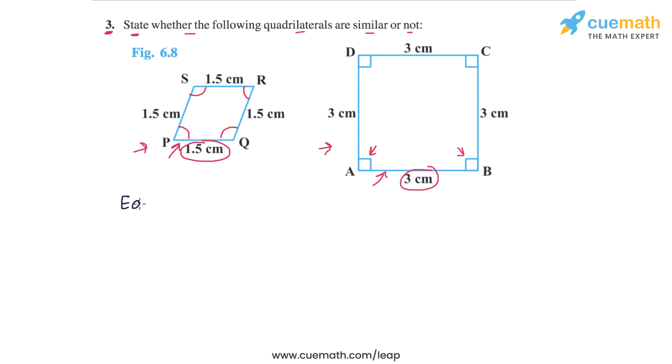Each ratio of corresponding sides is, from the figure, from the data given, 1.5 cm by 3 cm, which is equal to half. So the corresponding sides are all proportional.